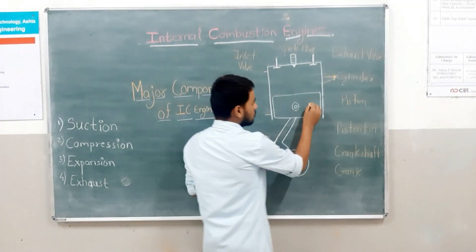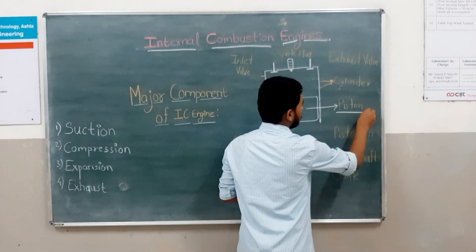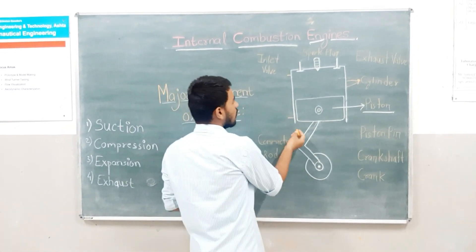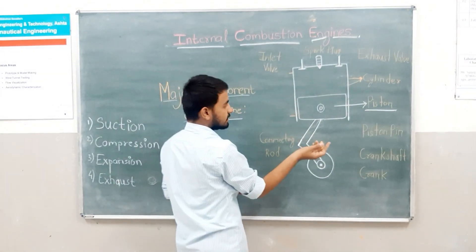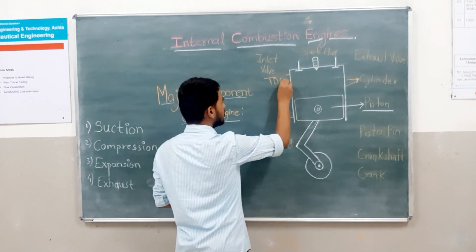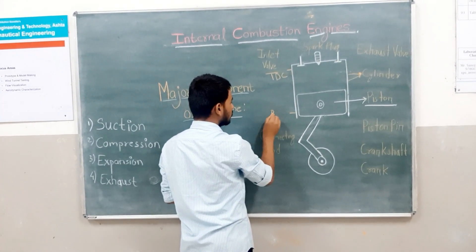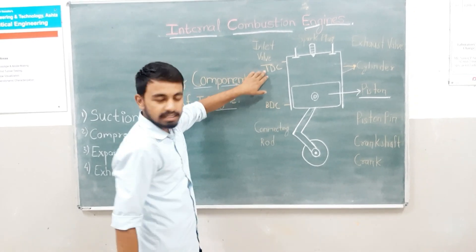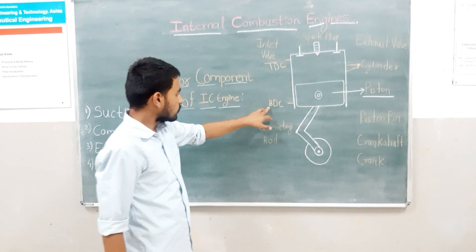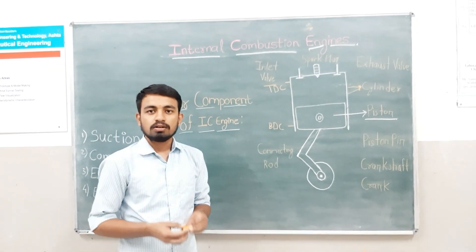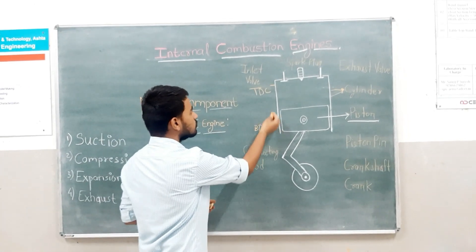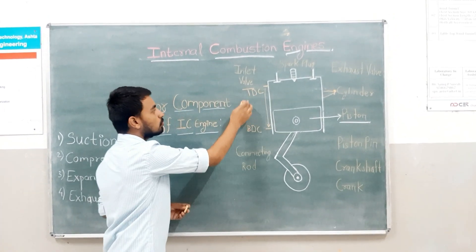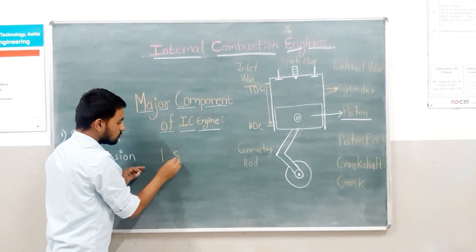The next part is the piston. The piston is placed inside the cylinder and moves up and down — from TDC to BDC. TDC is Top Dead Centre and BDC is Bottom Dead Centre. When the piston moves from TDC to BDC, this movement is known as one stroke.